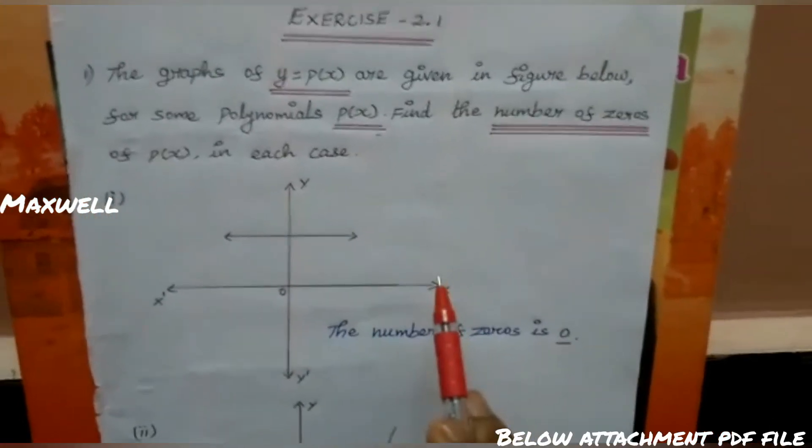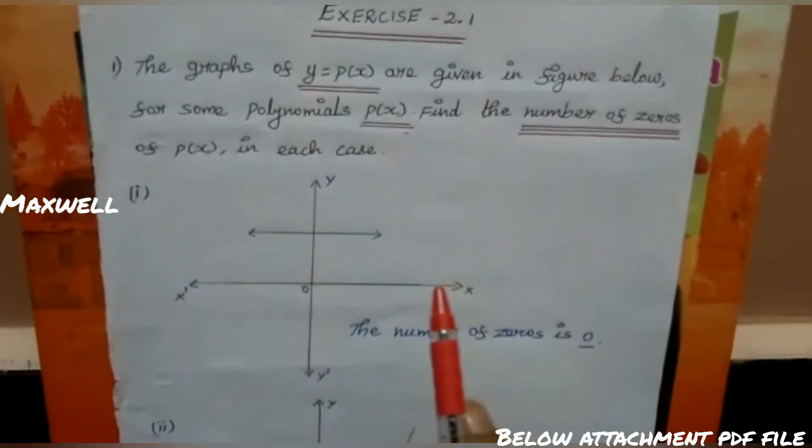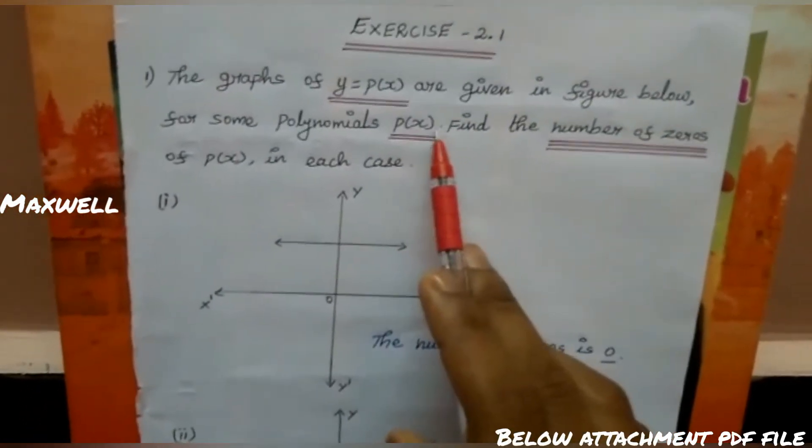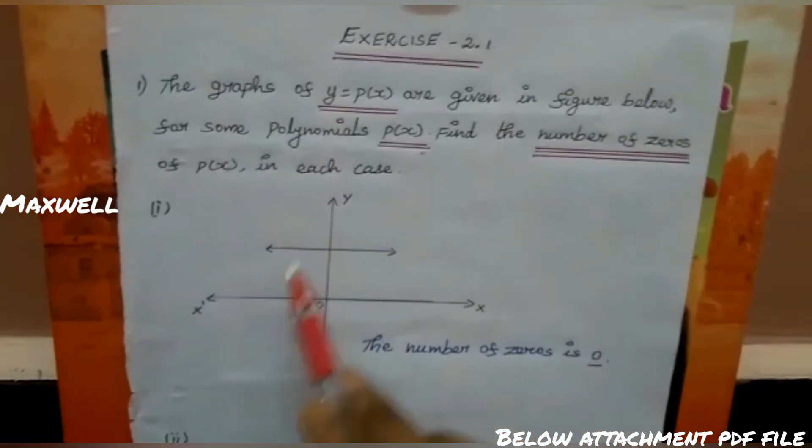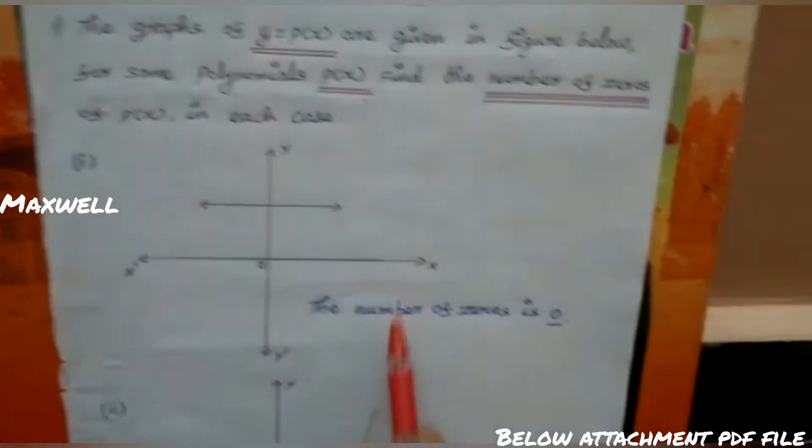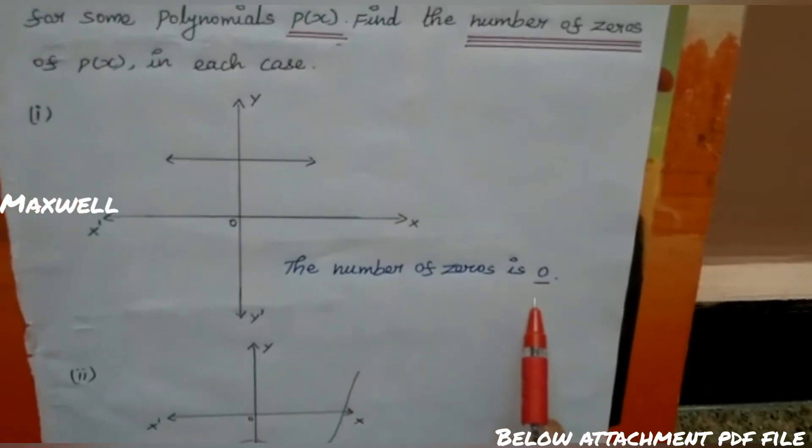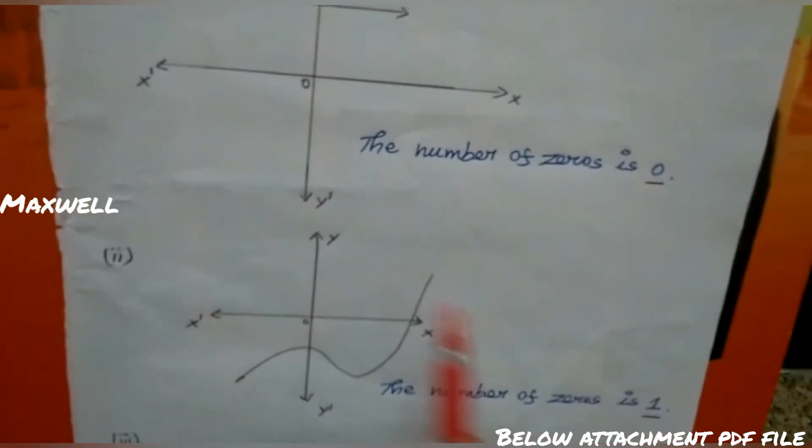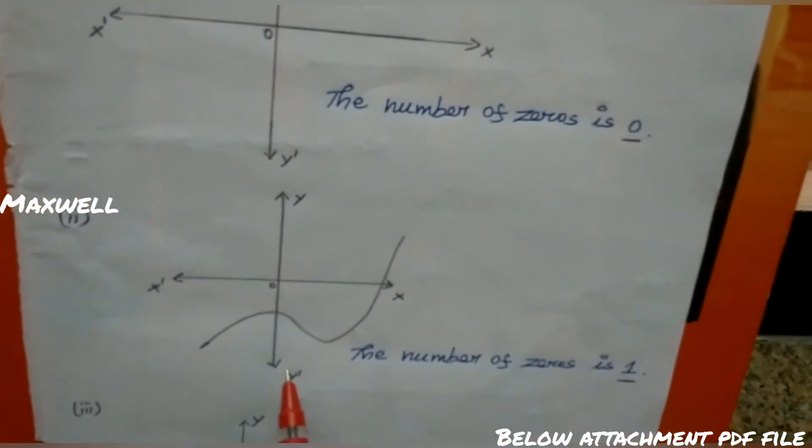First case: diagram of x-axis, p of x is given. Does the graph touch the x-axis? No, the number of zeros is 0. Second case: this diagram touches the x-axis. The number of zeros is 1.